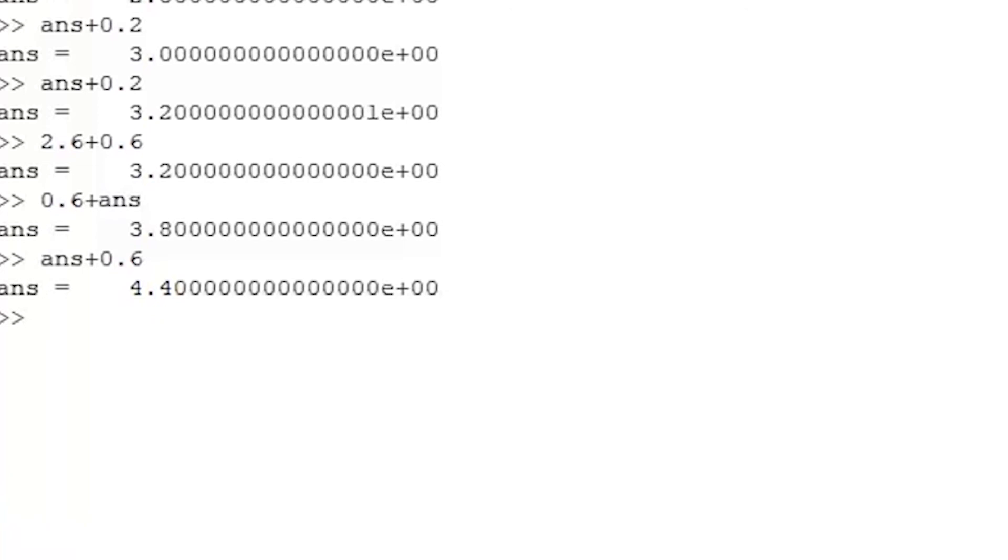And now, if I add 0.6 to this result, I get 5 EXACTLY. Octave ends up with an integer value, and there's no Roundoff Error.